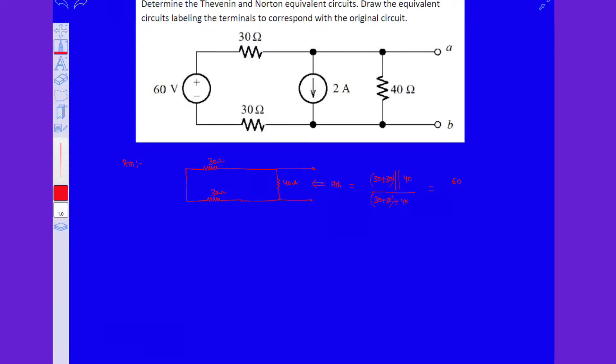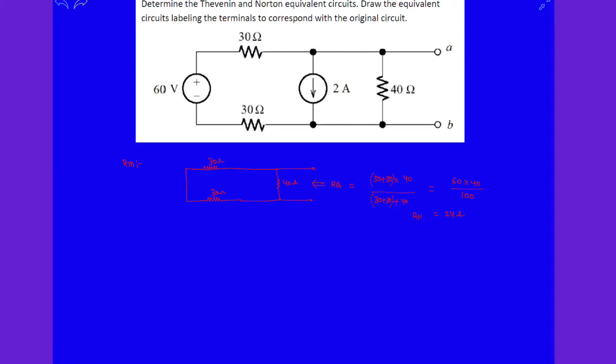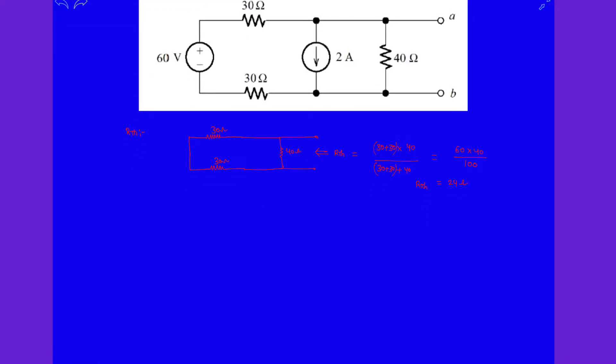Clearly 60 multiplied with 40 over 60 plus 40, that is 100. So it is 24 ohm. Clearly R_th is 24 ohms. That is part one, that is already over.